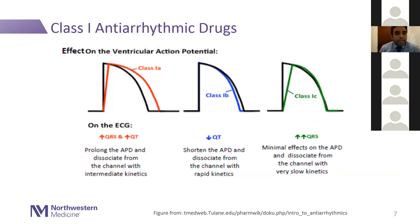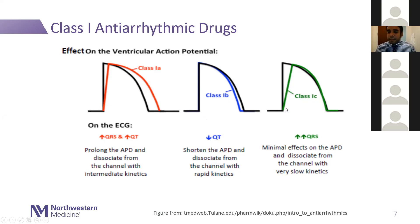Focusing on class 1 antiarrhythmics and how they affect the action potential: Class 1A agents have intermediate kinetics in binding and dissociating from sodium channels, and you can get prolongation of both the QRS and QT with these agents. Class 1B antiarrhythmics have no effect on the phase zero slope but can shorten the QT interval slightly — the weakest of the three in terms of sodium channel blockade, because of rapid kinetics. Flecainide and propafenone — the class 1C agents — have the most pronounced effect on the phase zero slope, with not much effect on QT interval and very slow kinetics.